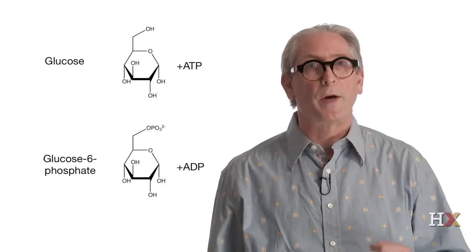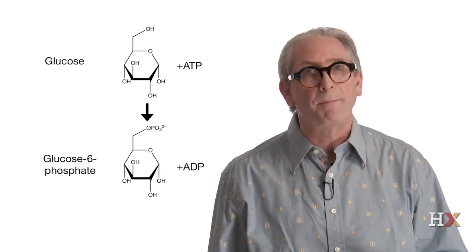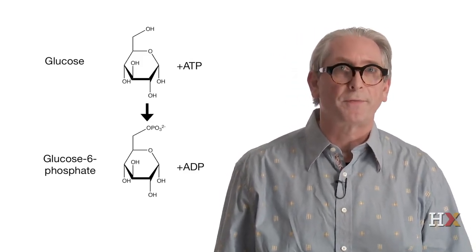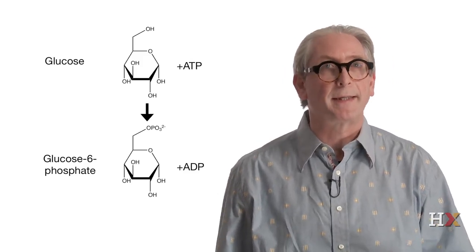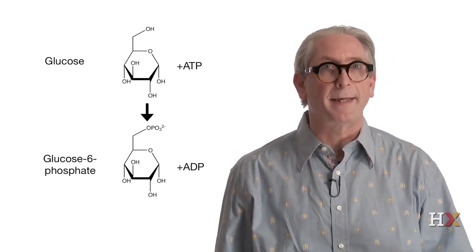If we take an example of a reaction, for example, the first step of glycolysis, where glucose reacts with ATP to form glucose 6-phosphate and ADP, this reaction is catalyzed by an enzyme called hexokinase.